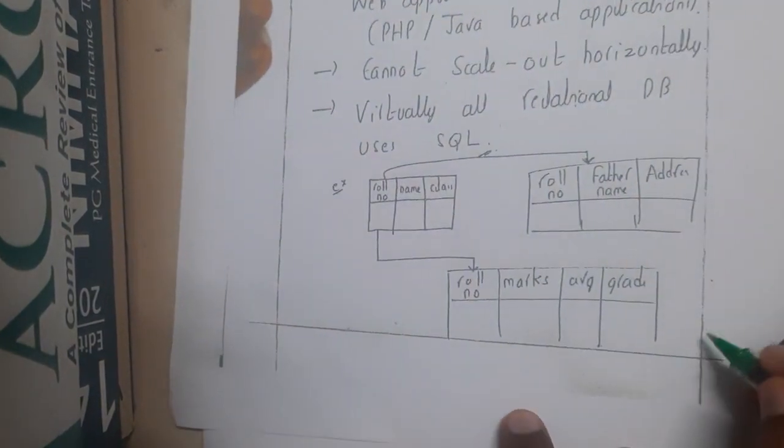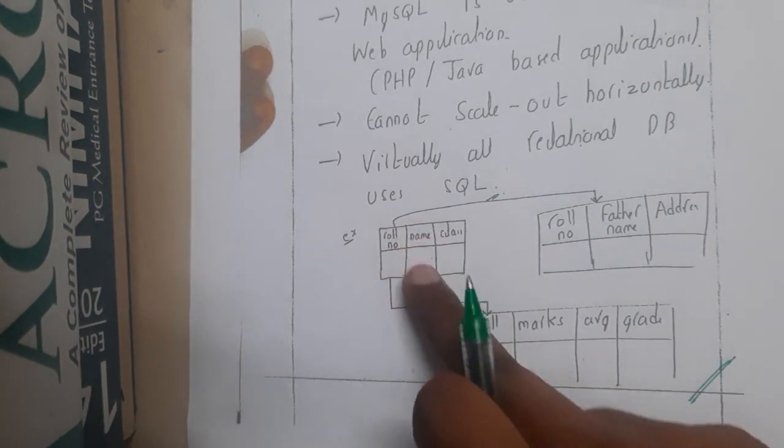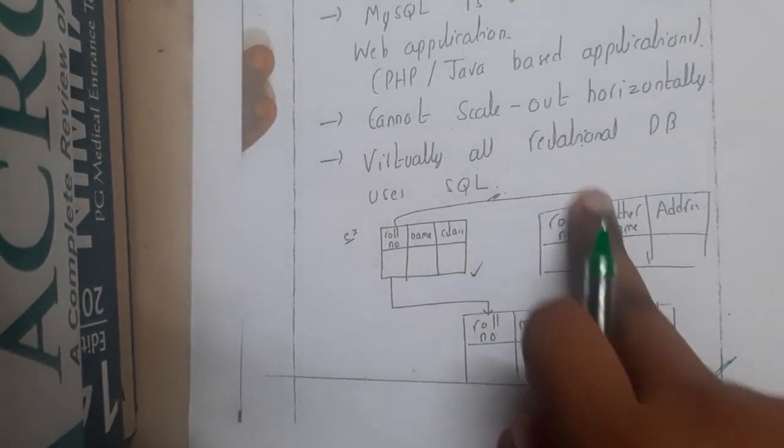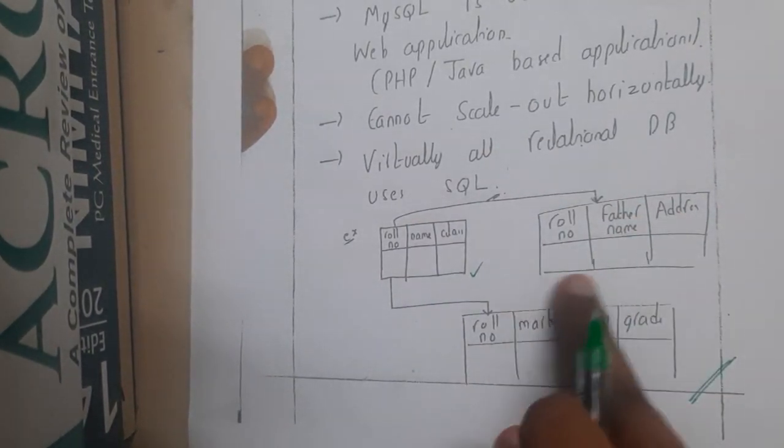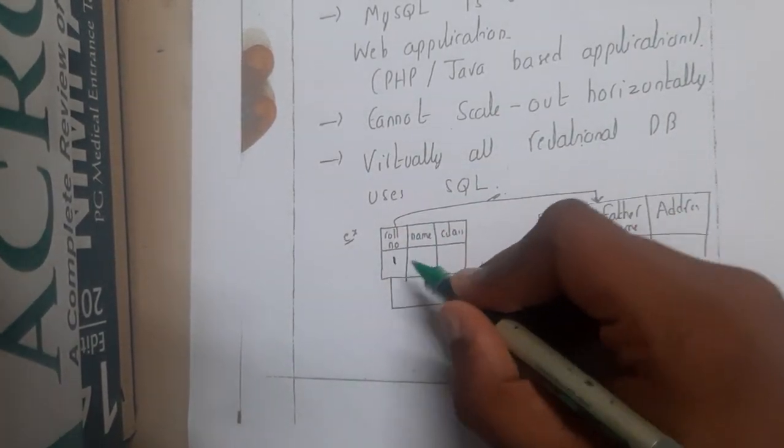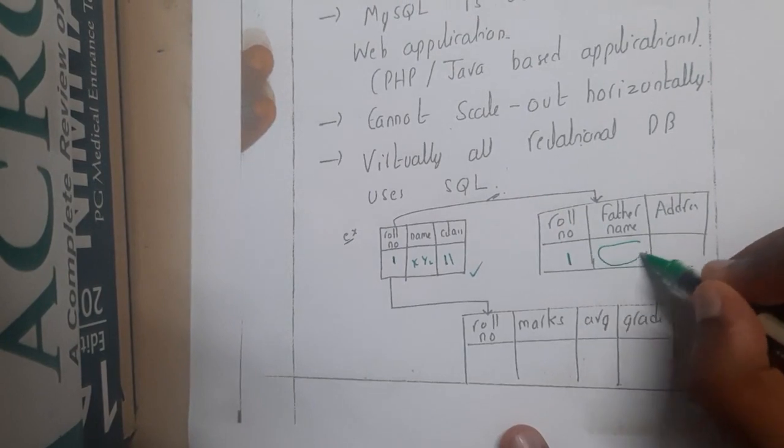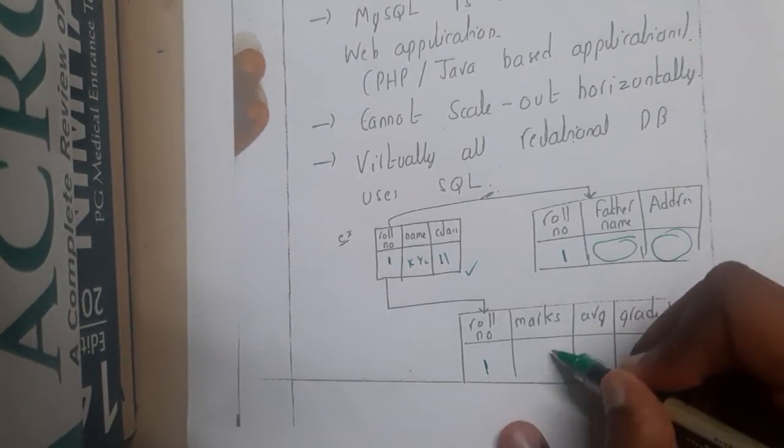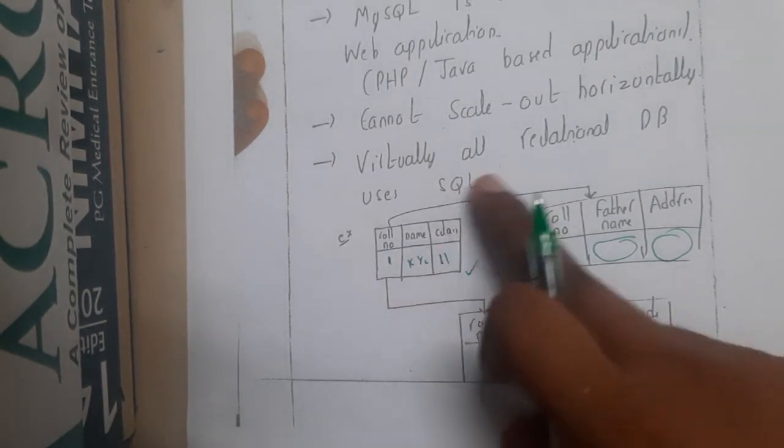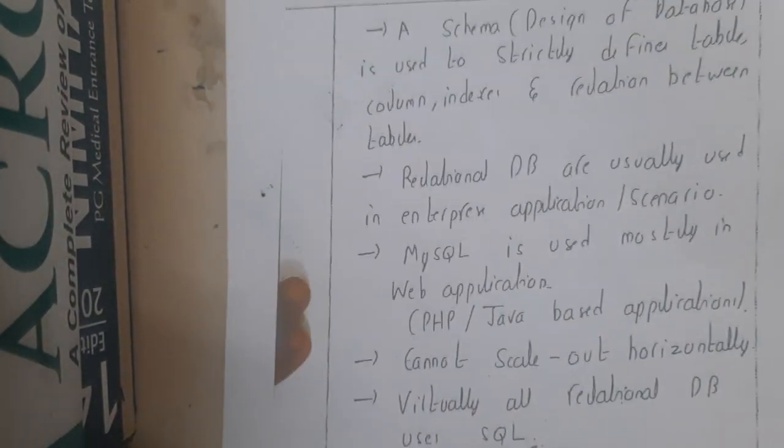In this way I have drawn it here. We are having roll number here. The first main table has roll number, name, and class. One more table has their father details and address. Similarly, we are having one more table with marks, average, and grades. If a student has roll number one, XYZ, and class is second class, for roll number one he will have a particular father name and address. Similarly, for that roll number one, he will have his marks, average, and grade. For that roll number one only, we are storing his data in multiple tables and they are linked. That concept is relational databases.